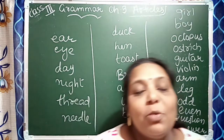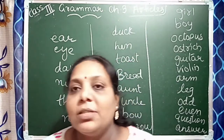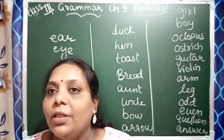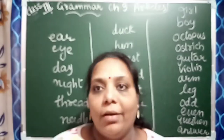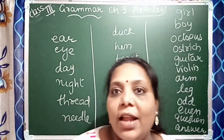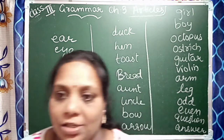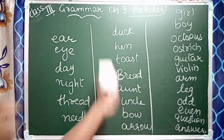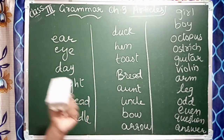Hello friends, welcome to my channel. Class 3 grammar subject, chapter 3 — I would explain to you about articles: indefinite articles and definite articles. Now, some words I have written and you have to write 'a' or 'an'.